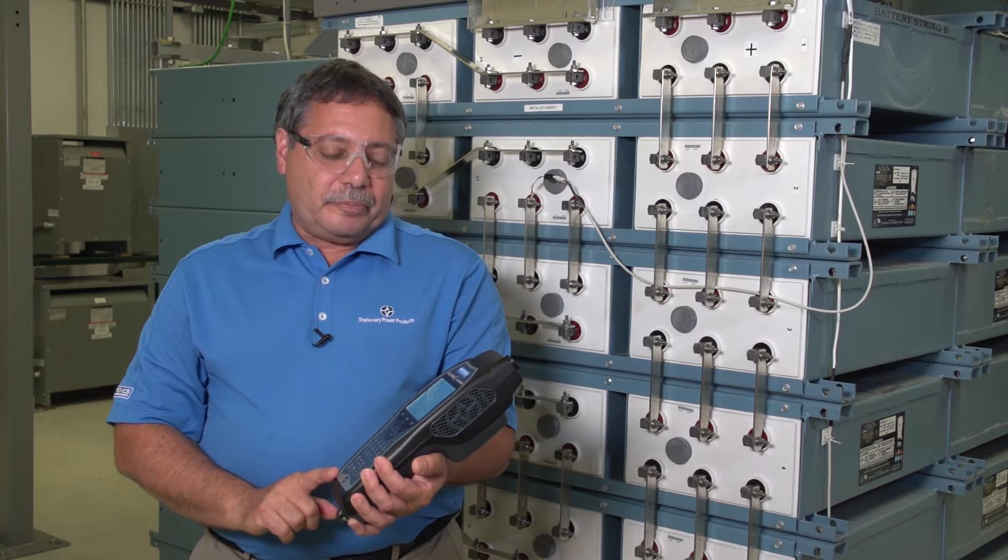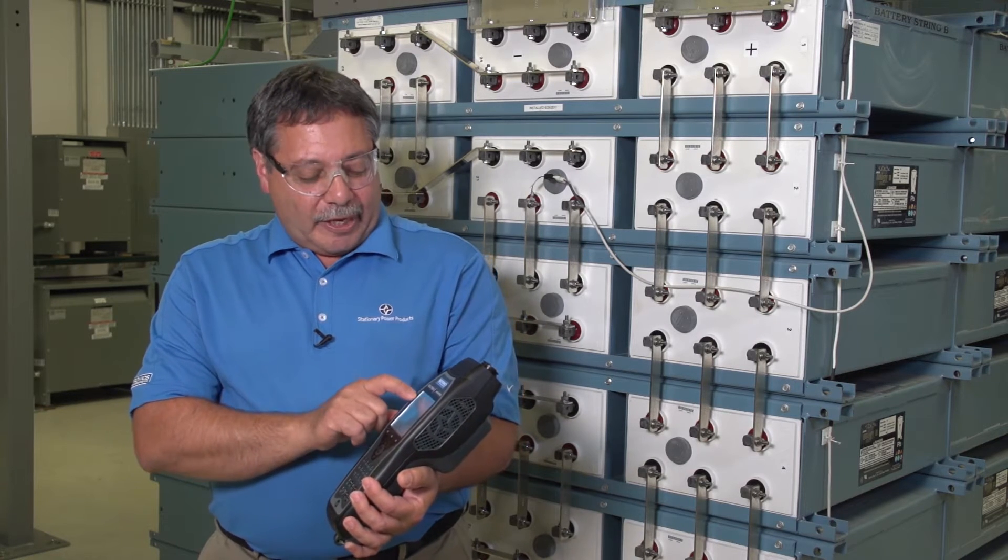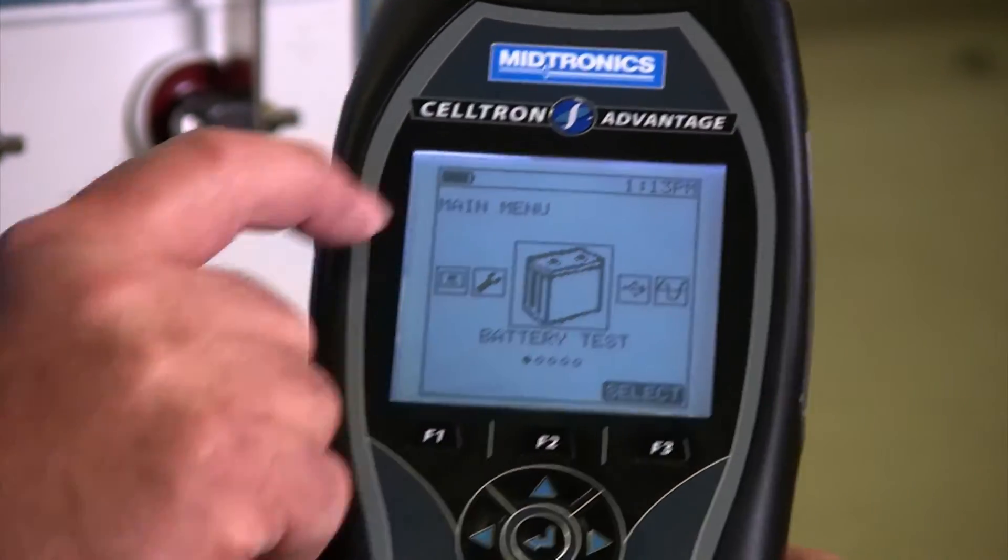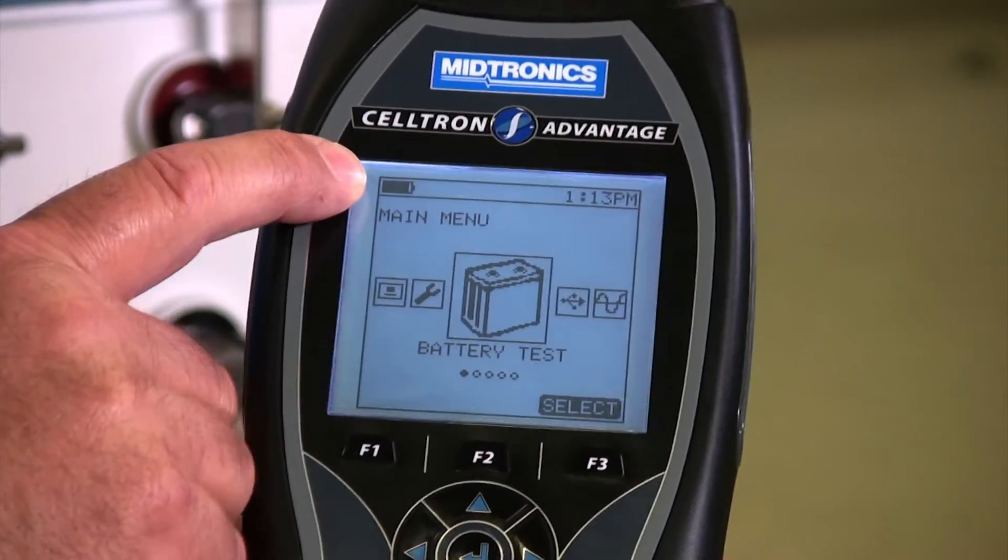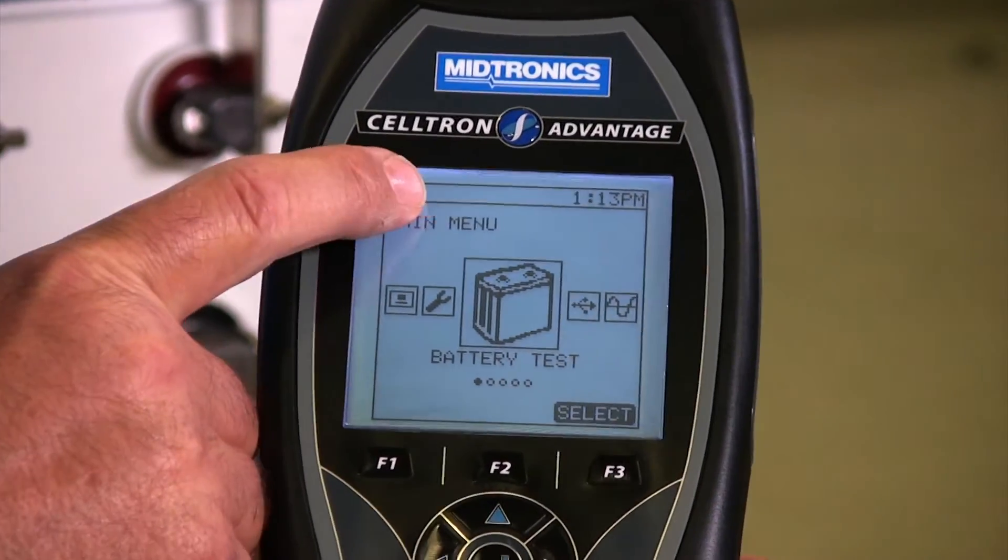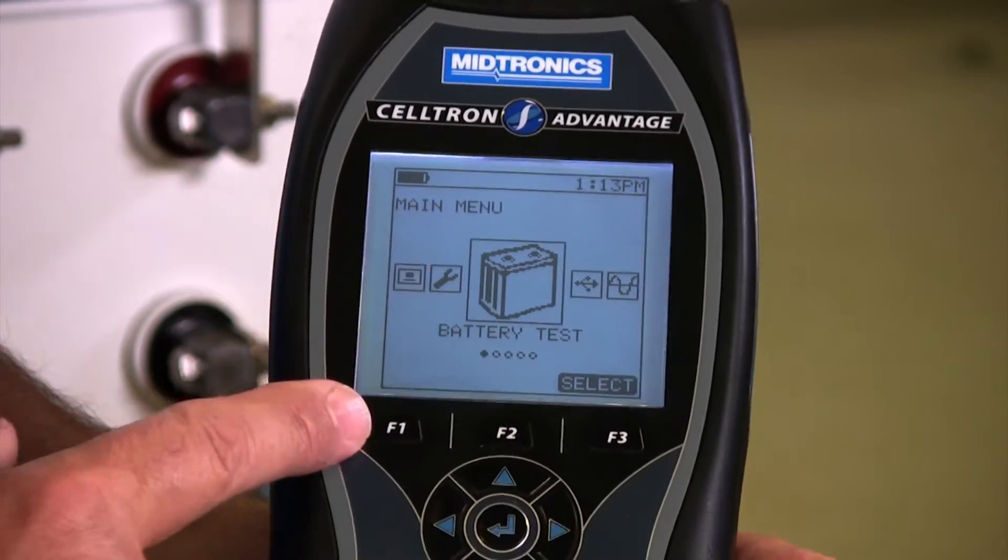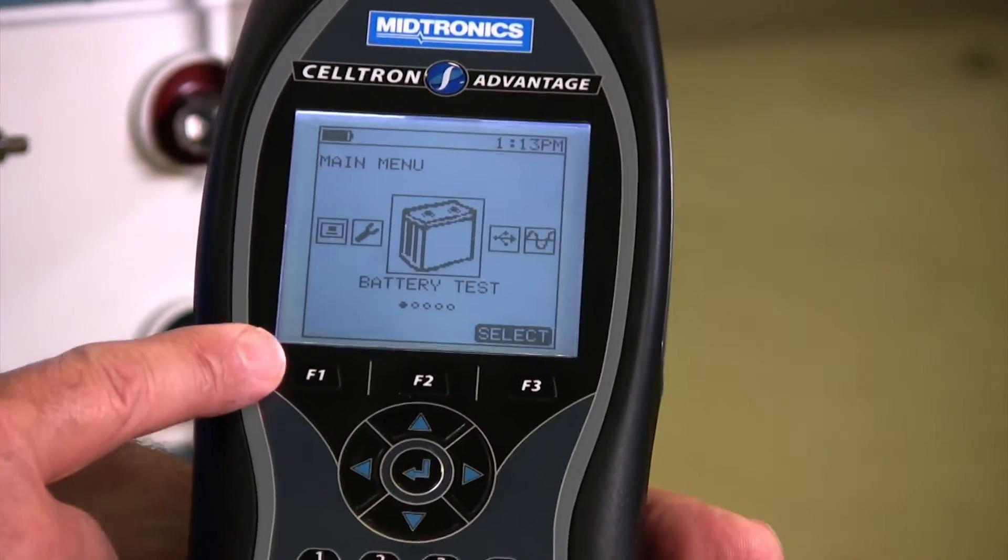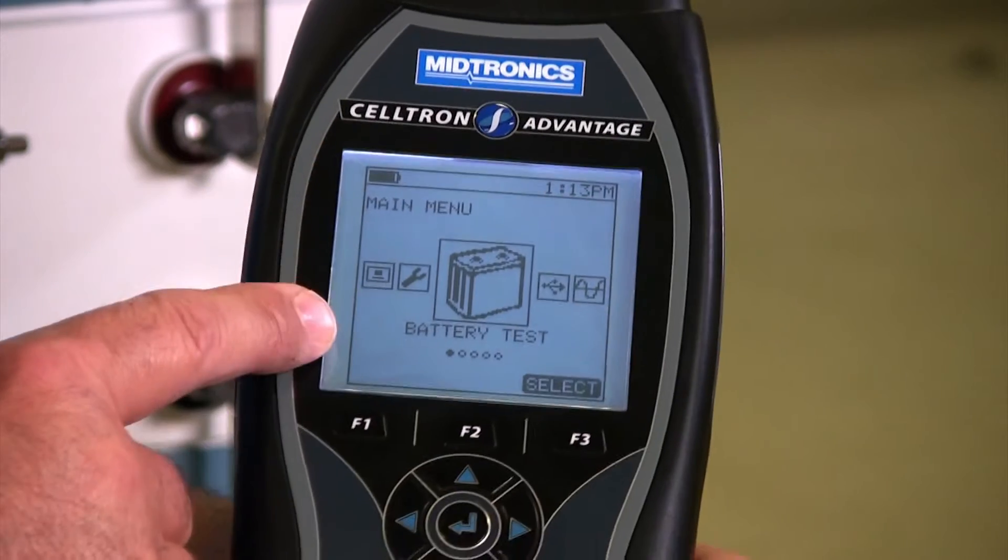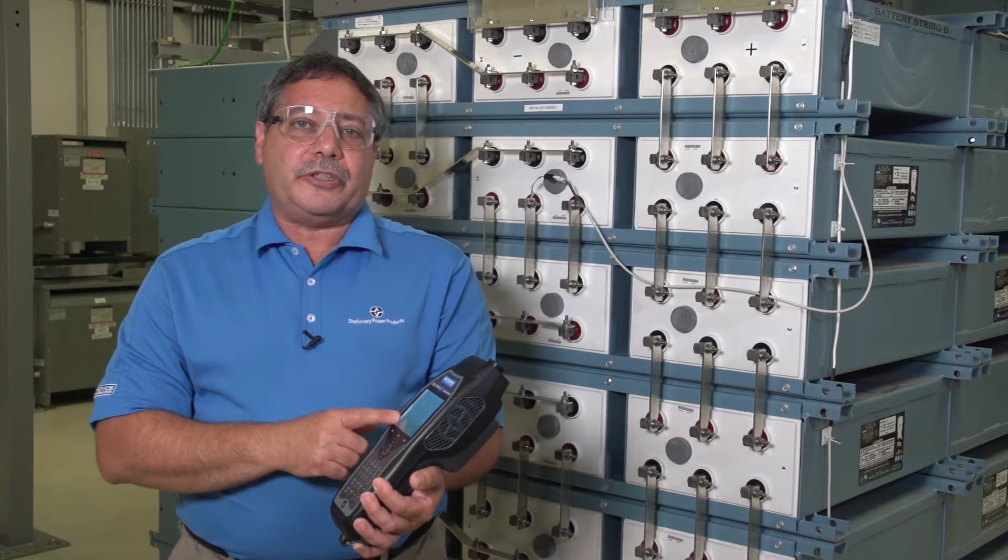Just give the tester a minute to boot up. When you do get to the main screen you have a quick icon here that's going to show you your internal battery's health, so how much is it charged. If that block is full and black then you have a full battery. As it gets halfway you have half the battery life left.